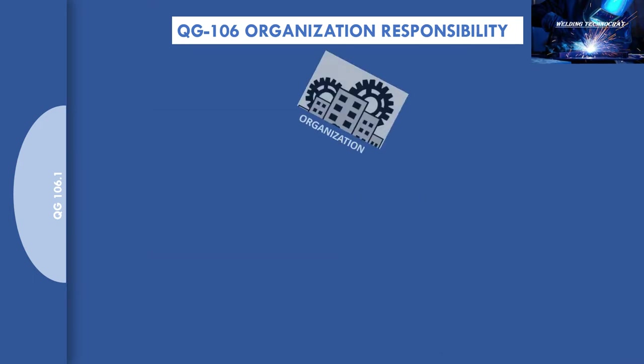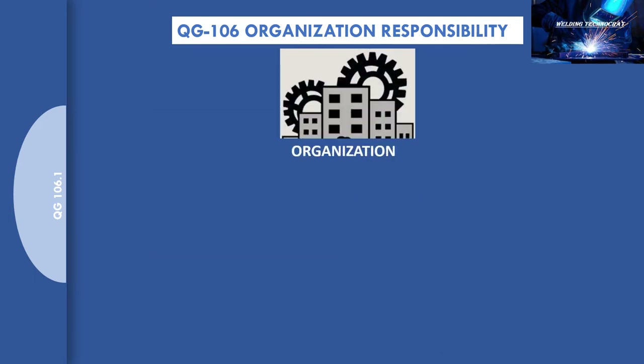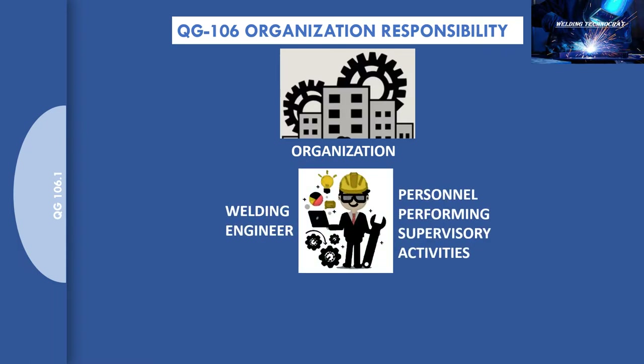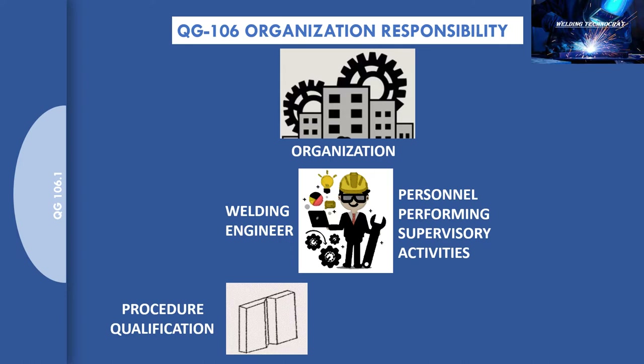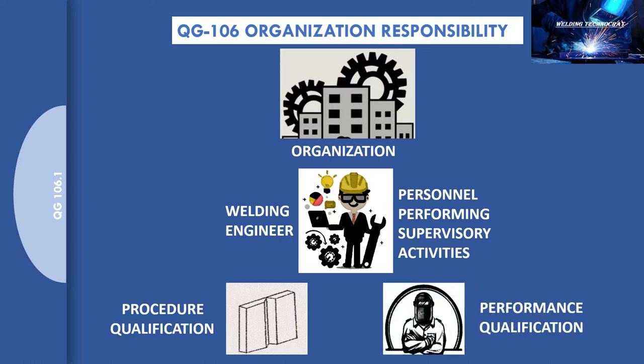Consider a heavy manufacturing organization where welding is carried out. The organization, in compliance with the requirement of QG-106 Organization Responsibility, must designate a personnel for performing supervisory activities — that is, a welding engineer — with the responsibility of conducting welding procedure qualification tests as well as welder or welding operator performance qualification tests.